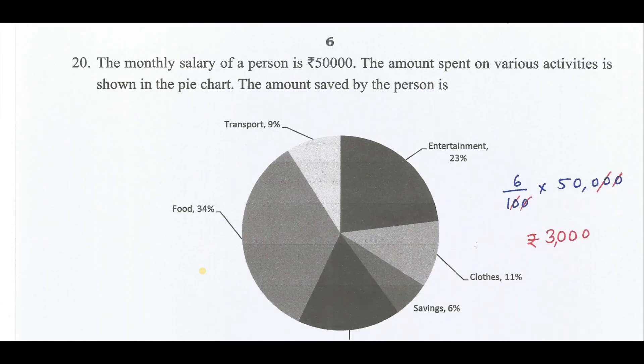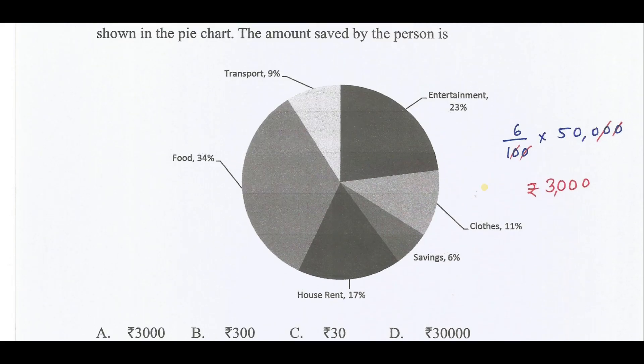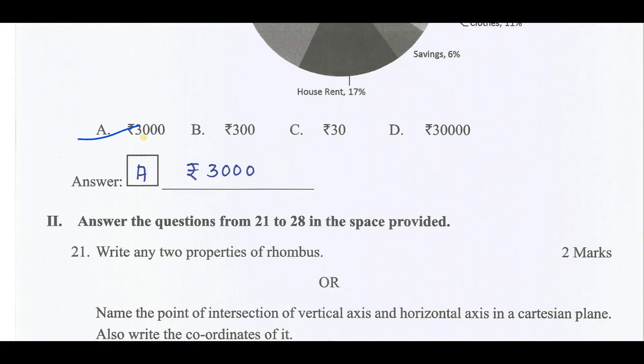The monthly salary of a person is 50,000. The amount spent on various activities is shown in the pie chart. The amount saved by the person is 6% of 50,000 which is 3,000. Therefore the correct answer is option A.